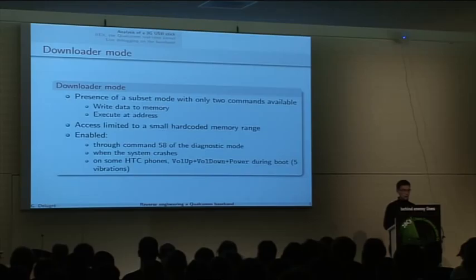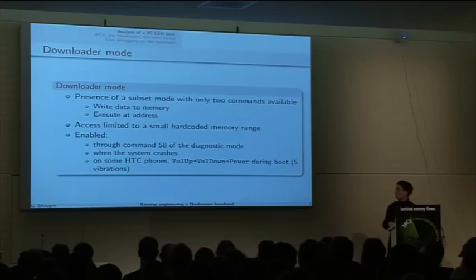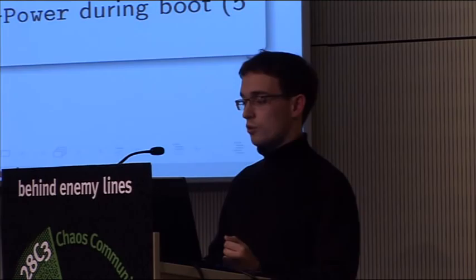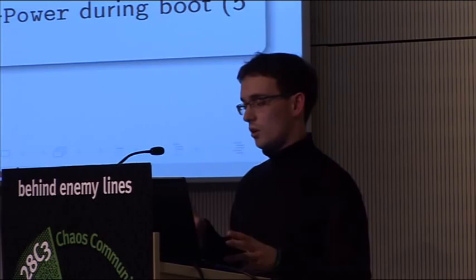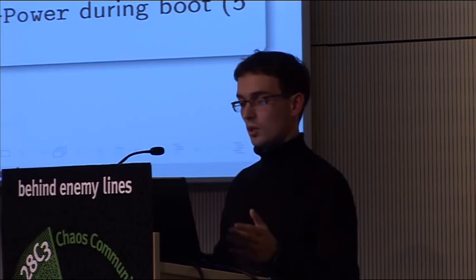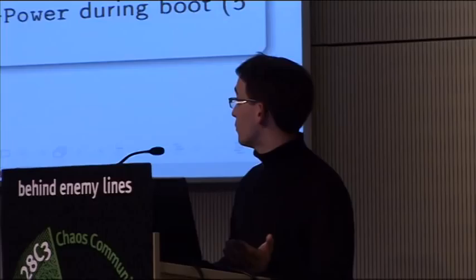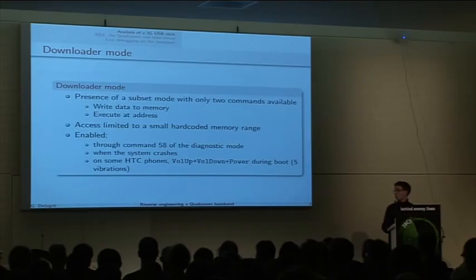There is also a second mode accessible from the diagnostic mode called the downloader mode. It's a mode specifically designed to write a piece of code into memory and execute it. When you enter this mode, you have only two commands available: write data, and execute at address. You can only write in a hard-coded range of memory which is quite small. To get to this mode, you have to go through command 58 of the diagnostic mode. It's also enabled when the system crashes.